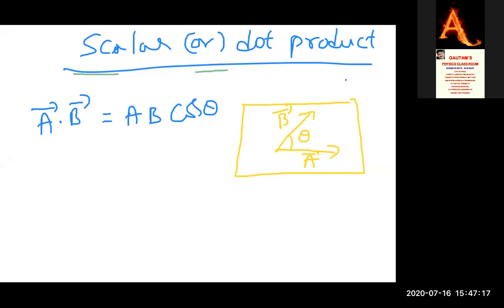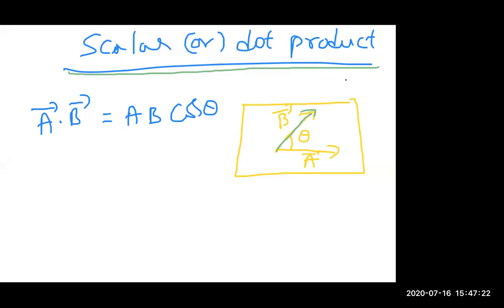We are going to discuss the scalar product or dot product. We have taken two vectors, a bar and b bar, inclined at an angle theta. The multiplication of two vectors is written as a bar dot b bar, where the dot is placed between them. When we multiply two vectors and get a scalar result with no direction, we call it the scalar product, also known as the dot product.